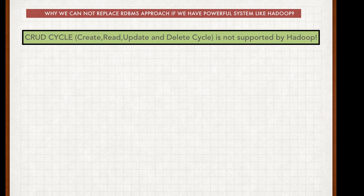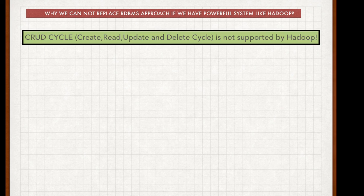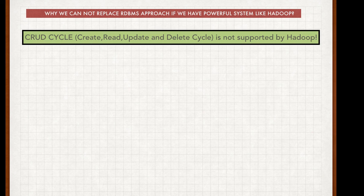That does not mean Hadoop is not powerful — Hadoop is very powerful, and we will discuss many features of Hadoop compared to RDBMS. But for structured data, it can also be processed through the RDBMS approach, and that is the reason many organizations have not moved to big data. They are still processing their data with RDBMS because they generate only structured data. When they generate unstructured or semi-structured data, they are then forced to move to Hadoop.